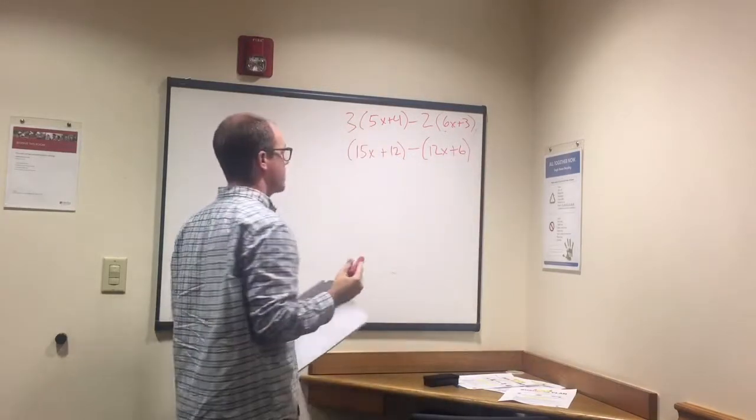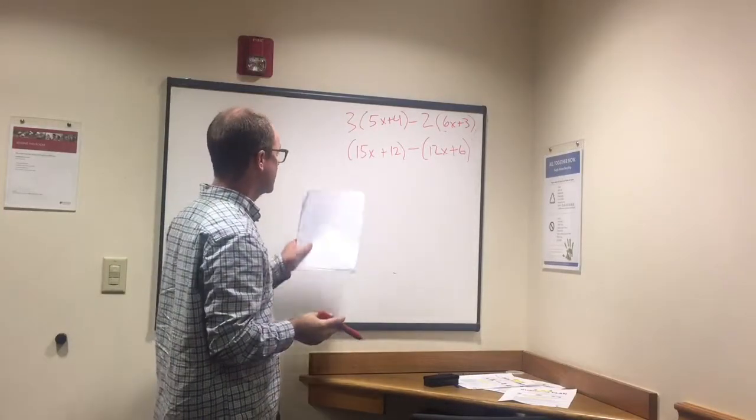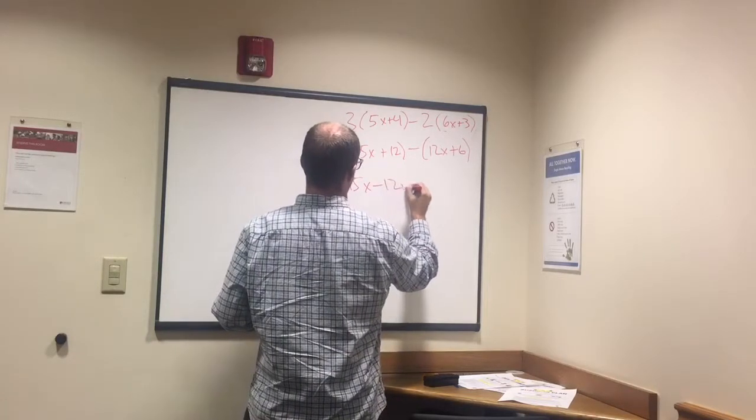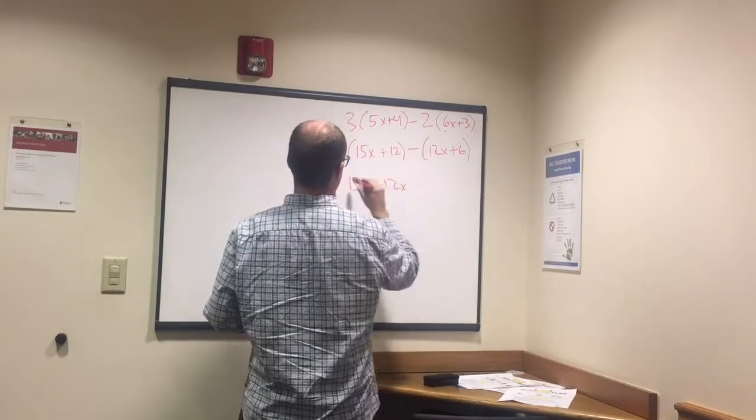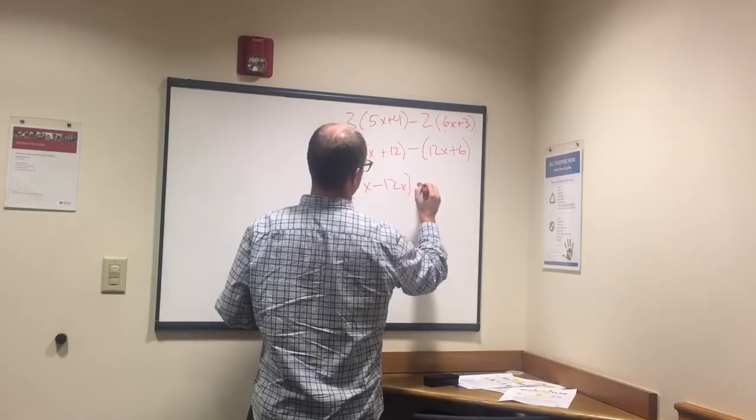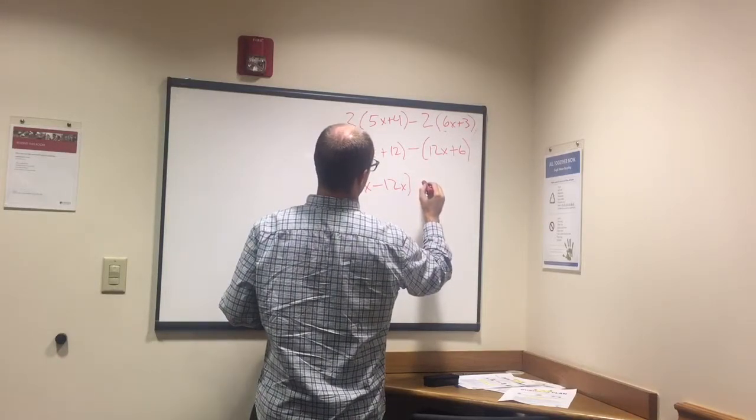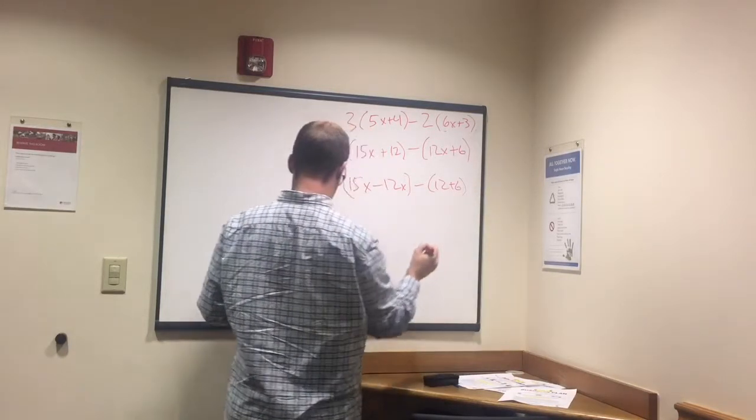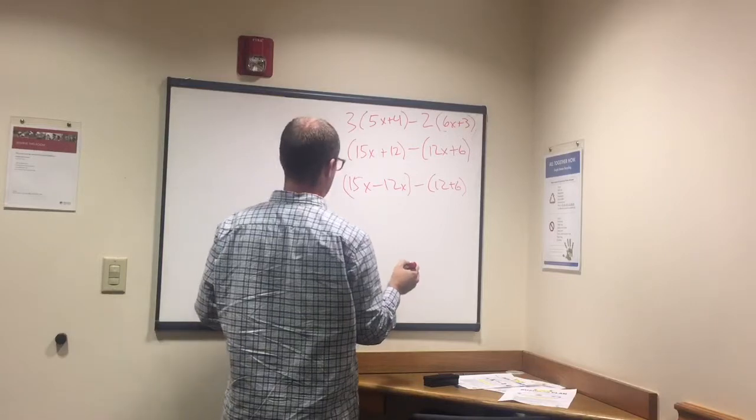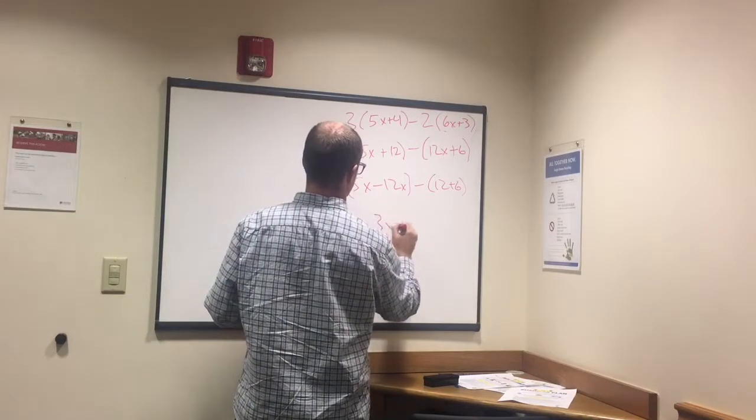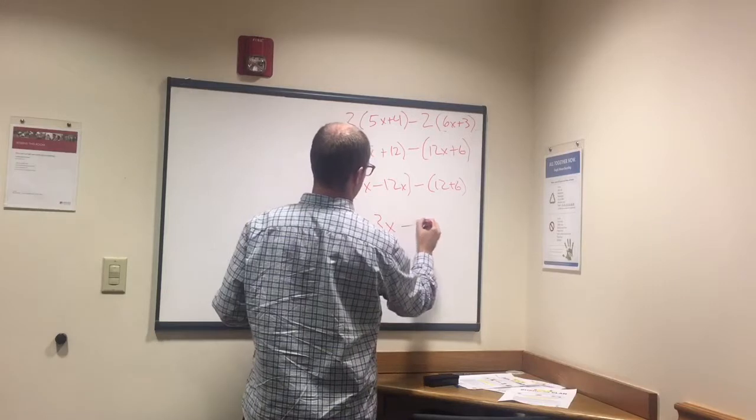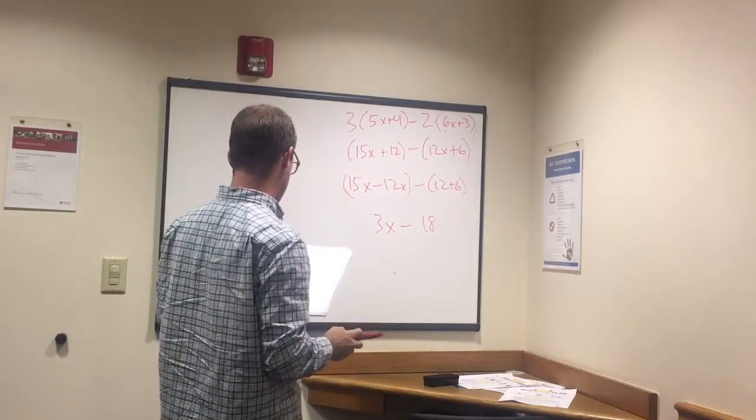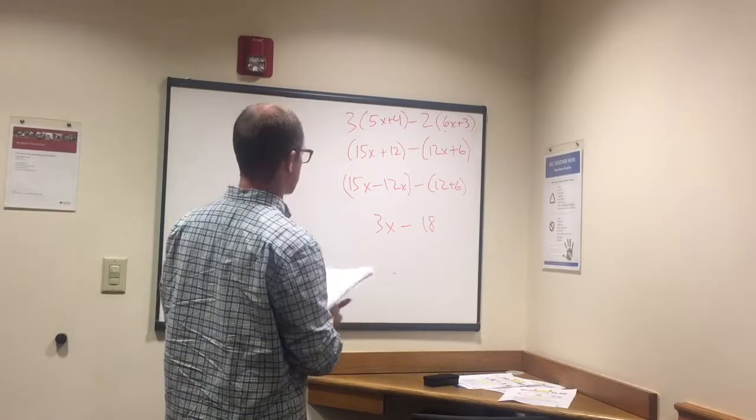Okay. Now we're going to subtract like terms. So we have 15x minus 12x, that one minus that one, and 12 plus 6, 18. So 15x minus 12x is 3x, minus 12 plus 6 is 18. Okay, looks good.